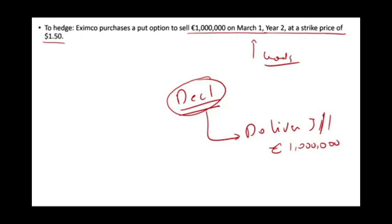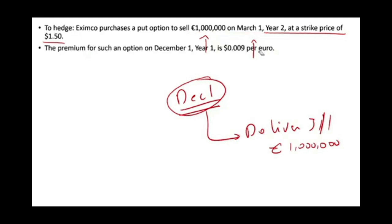It's unrecognized because they haven't delivered and don't have a receivable. To protect their position, they bought a put option to sell the euro at $1.50. The premium for this option is $0.009 per euro. With 1 million euros, they have to pay $9,000 for the option. That $9,000 is the cost of having this put option.